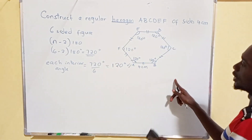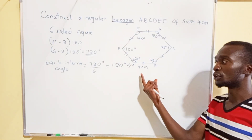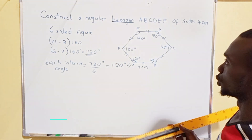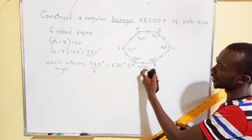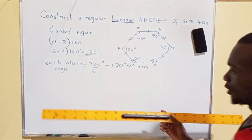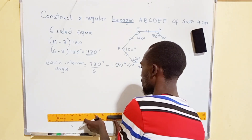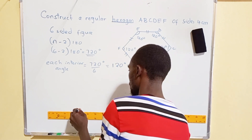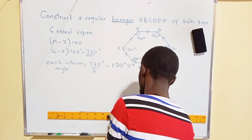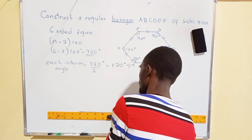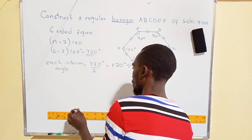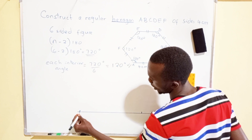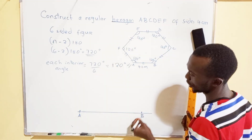Now let me draw the sides. Each side of the hexagon should measure 4 centimeters. I'm going to use the whiteboard ruler and scale to draw the hexagon. First, I draw the baseline AB. This is my line AB, which is equal to 4 centimeters.